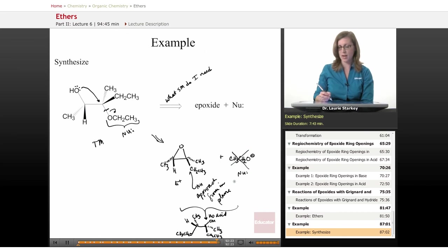So this is not going to work. This gives the wrong product. It gives the wrong regiochemistry. So, how do I force my nucleophile into this carbon? I want the nucleophile to attack this carbon. How do we force it over there? How do we get the nucleophile to go to the more substituted carbon?